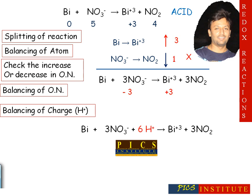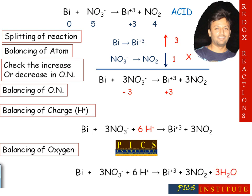We need to add six H⁺ ions to the left-hand side in order to balance the charge. Charge is balanced, oxidation number is balanced, and the last step is to balance the number of oxygen atoms. The left-hand side consists of nine oxygen atoms and the right-hand side consists of six oxygen atoms.